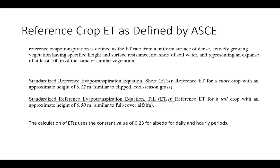The ASCE defines the hypothetical reference crop as an ET rate from a uniform surface of dense, actively growing vegetation having a specified height and surface resistance, not short of soil water, representing an expanse of at least 100 meters of similar vegetation. ASCE provides two formulas: the short crop or grass reference at 0.12 meters height, and the tall crop reference at 0.5 meters height, similar to full-cover alfalfa. Both assume a surface albedo of 0.23 for net radiation calculation.